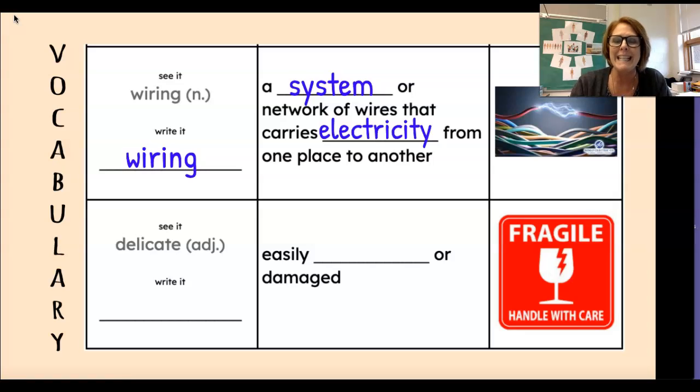The next word is delicate. Say it with me. Delicate. And this is an adjective. It's a word that describes a person, place, or thing, a noun. And it means easily broken or damaged. You have to handle this with care.